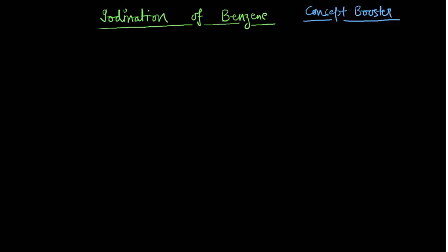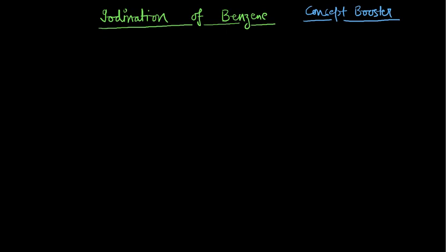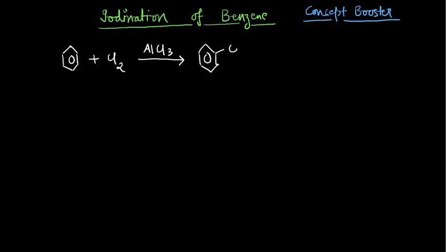First, let's see how halogenation of benzene occurs. Take the benzene molecule — for chlorination, you put chlorine and a Lewis acid catalyst, for example aluminium chloride. Straightforwardly, you will get a very good yield of chlorobenzene with simultaneous removal of HCl as byproduct.